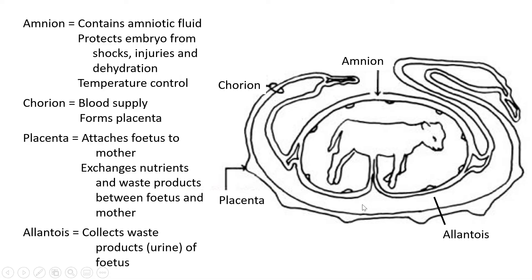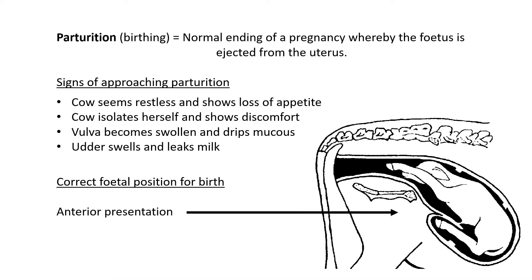Then we move on to parturition. Parturition is the fancy word that means giving birth — it's the normal ending of a pregnancy whereby the fetus is ejected from the uterus. The fetus comes out through the cervix and vulva. As long as it's inside the mother's body it's known as the fetus; as soon as it comes outside and starts breathing air, you have a calf.